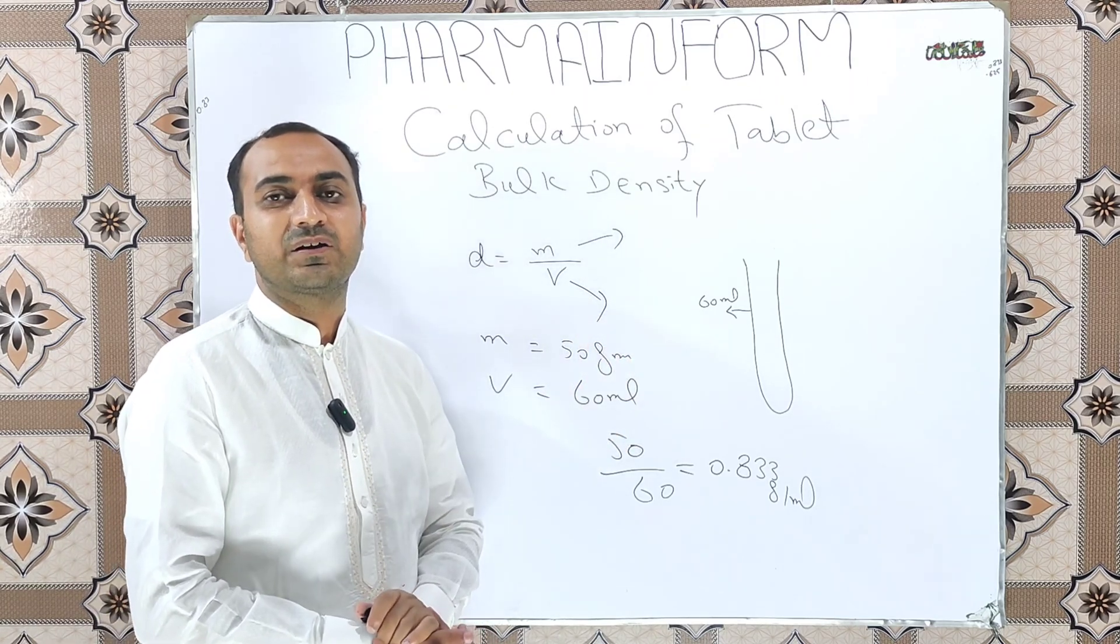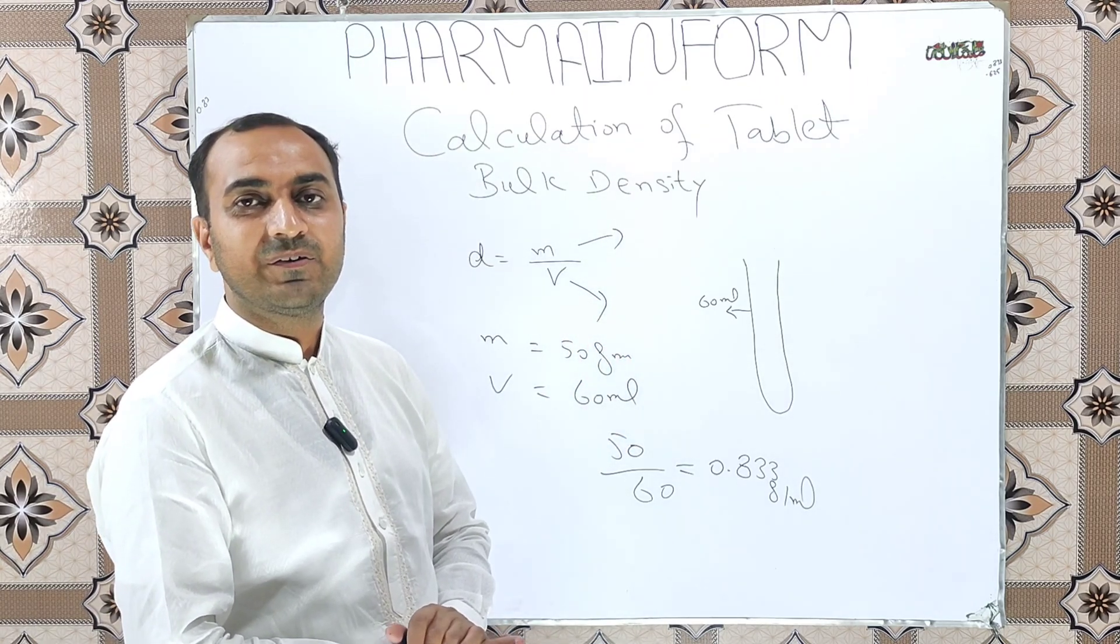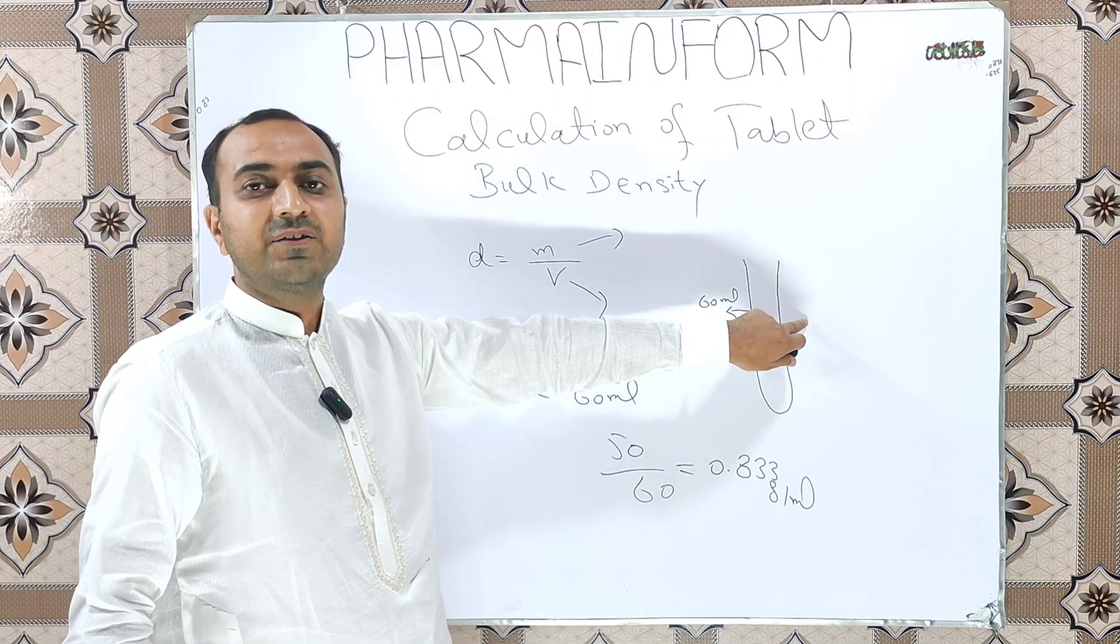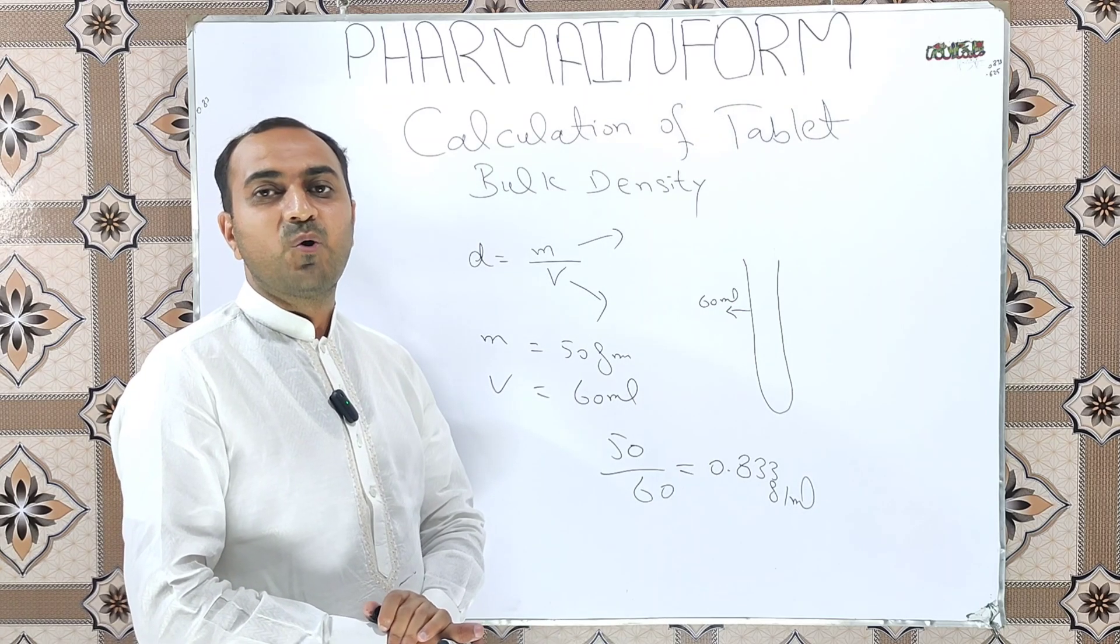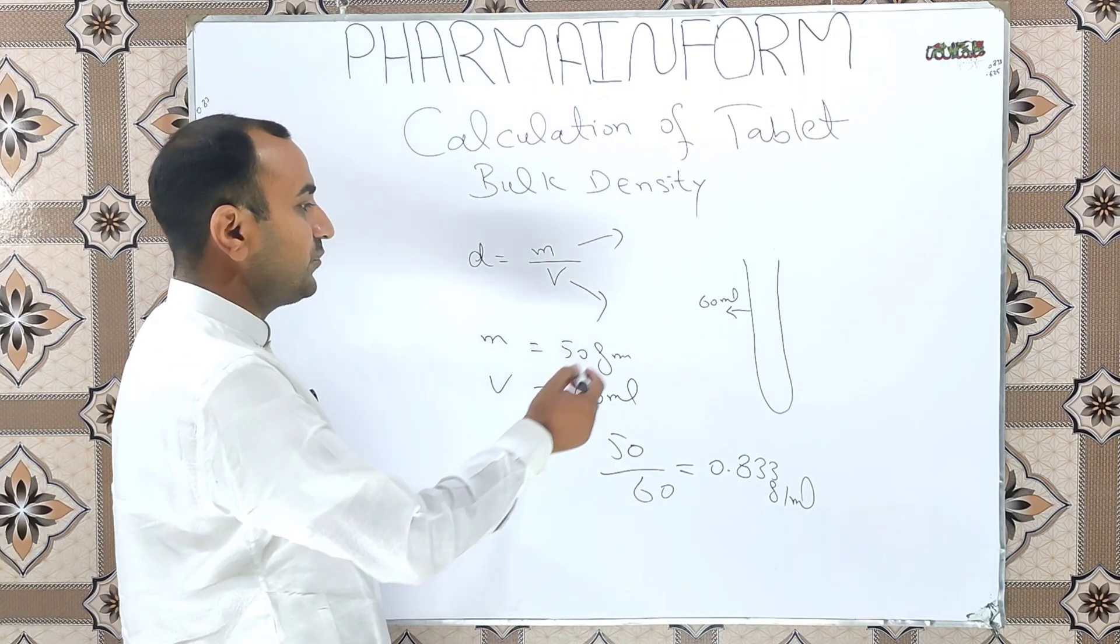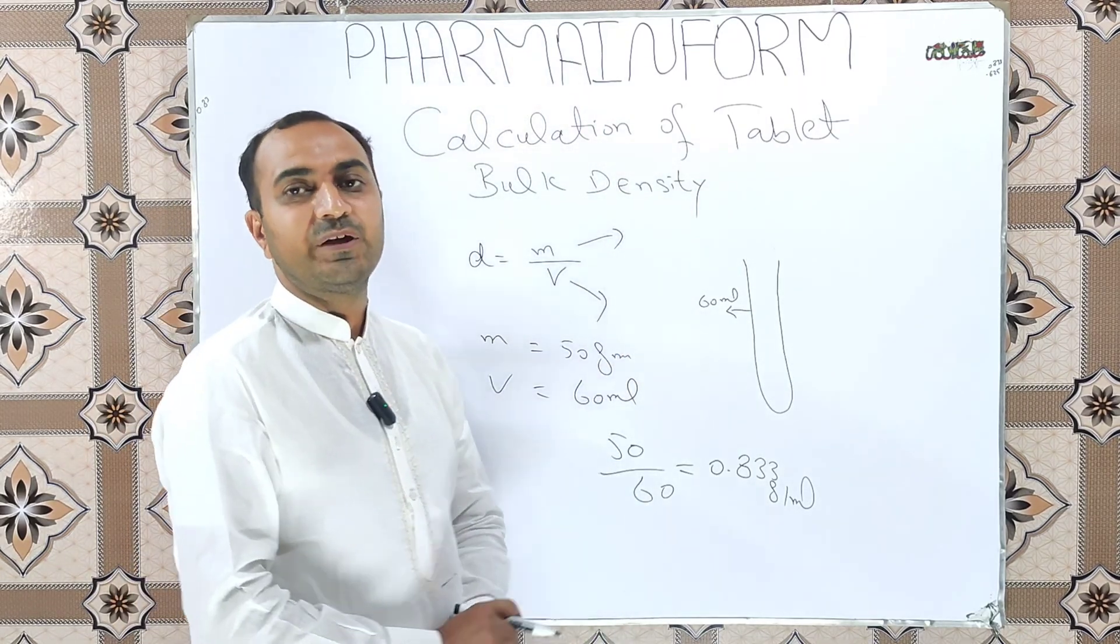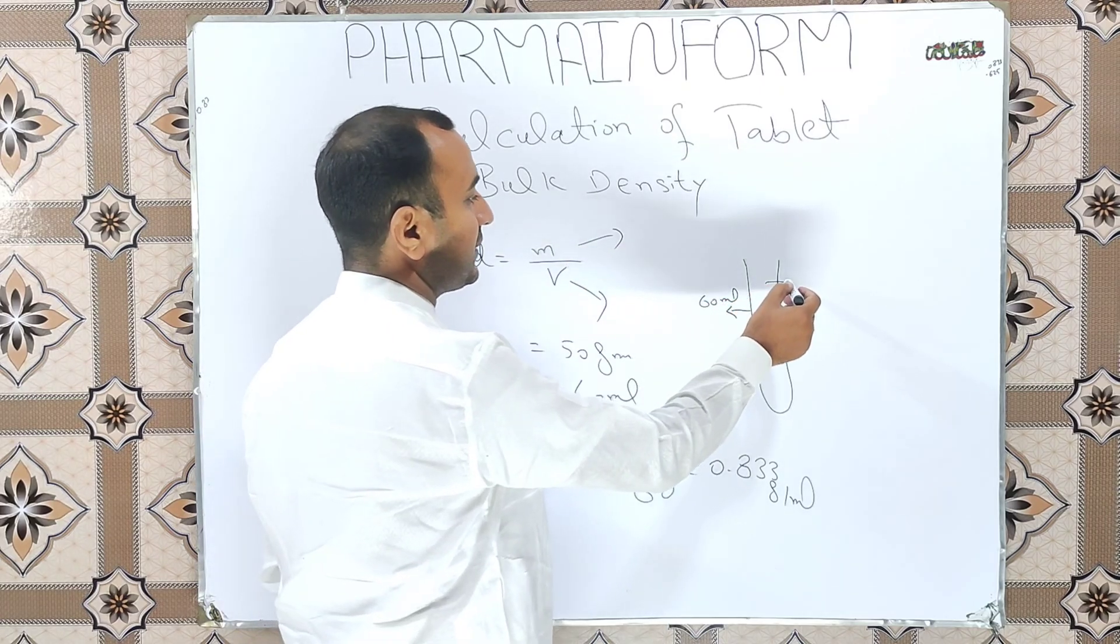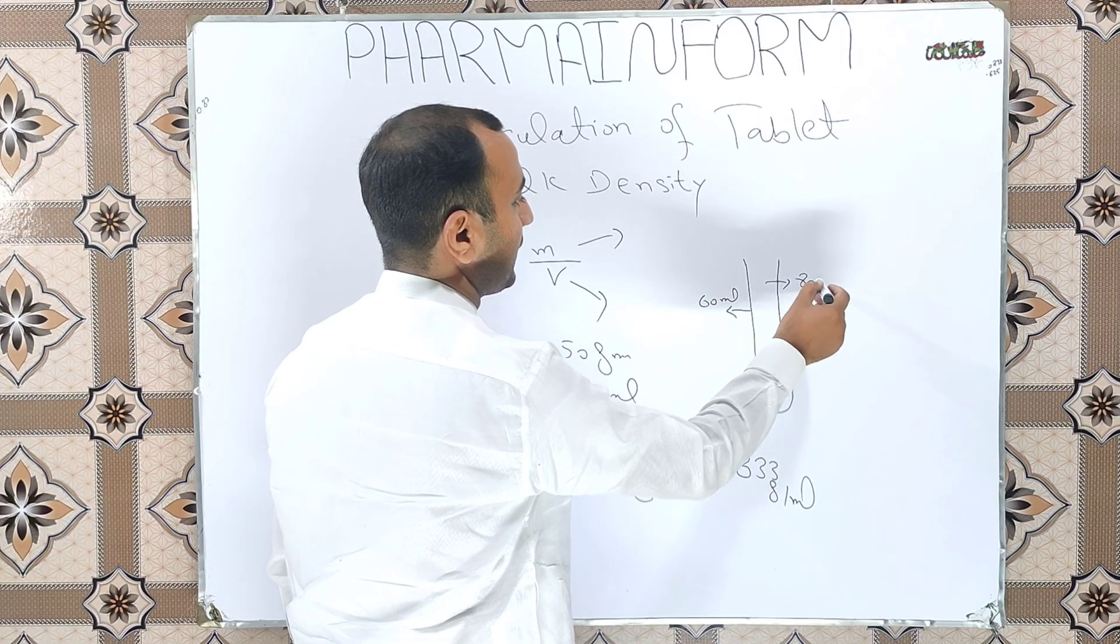Suppose this value is for round shape small tablets. When we add oblong shape large weight tablets in the measuring cylinder, more volume will be occupied. Let's take the example: suppose we add 50 gram weight of oblong shape tablet and they occupy the volume of 80 ml.